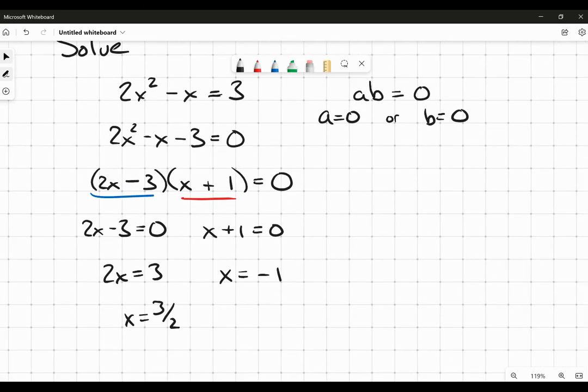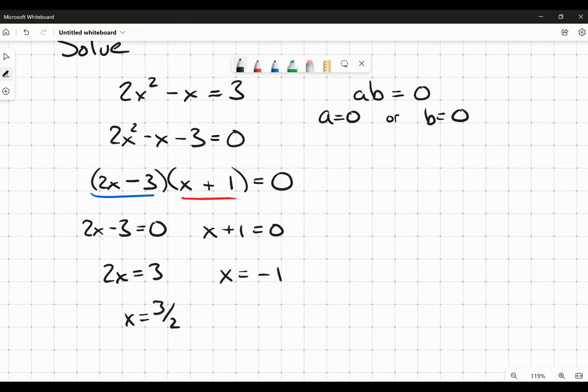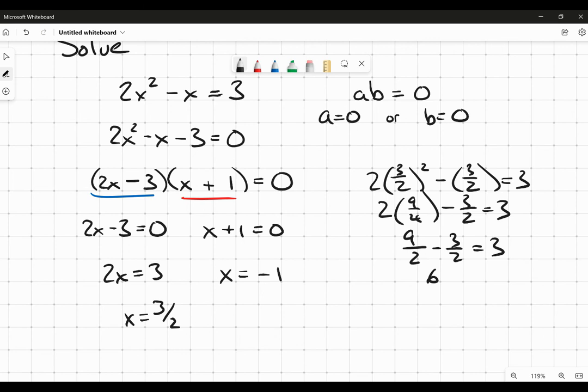Let's check this. So really quickly here, let's check. That's 2 multiplied by 3 over 2 squared minus 3 over 2. Does that get me 3? Well, this is going to be 2 times 9 over 4 minus 3 over 2 is equal to 3. So it's going to be 9 over 2 minus 3 over 2 is equal to 3. 6 over 2 is equal to 3. Yes, that's true. So that 3 halves works.